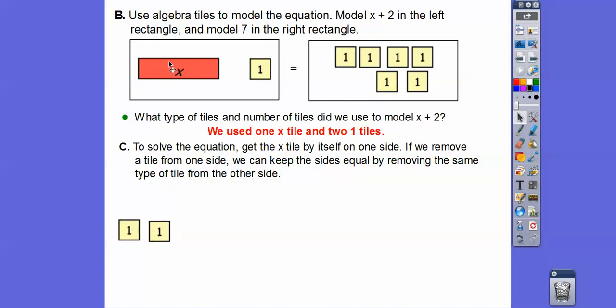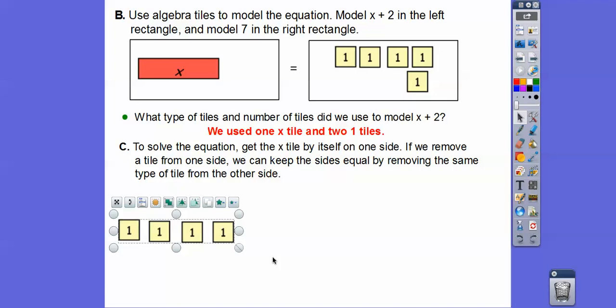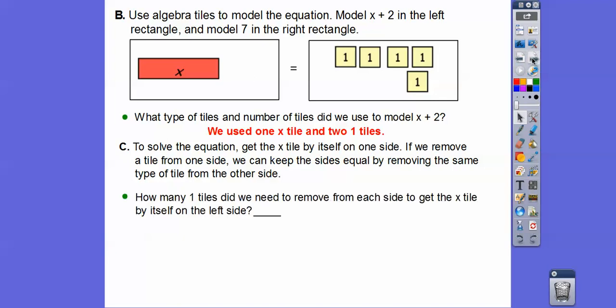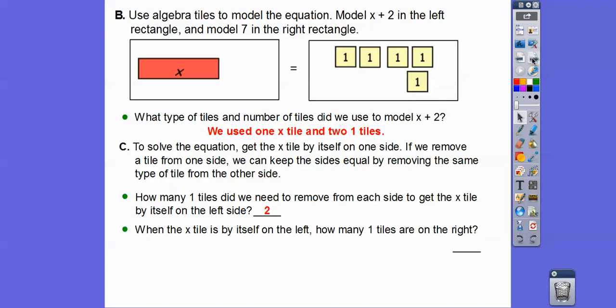We need to get x by itself. We're going to subtract — take away those one tiles — and as long as we do that on both sides of the equal sign, it stays equal. We needed to remove two tiles from each side. When the x tile is all by itself on the left, we count the tiles on the right: one, two, three, four, five. There are five of them on the right.